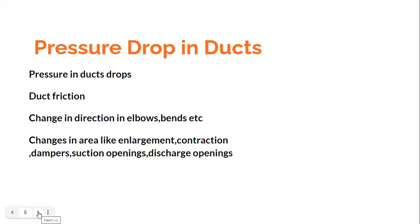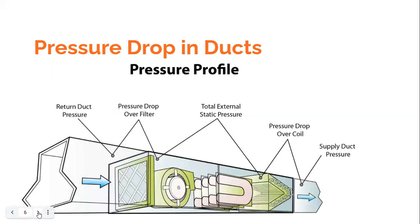This pictorial representation of external static pressure shows the AHU, including the coil and filters which also result in pressure drops. There will be a pressure drop in the return duct, in the supply duct, across the filter, and across the coil. All these pressure drops must be considered when sizing the duct.